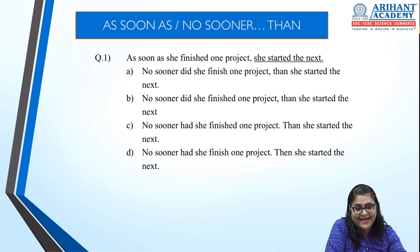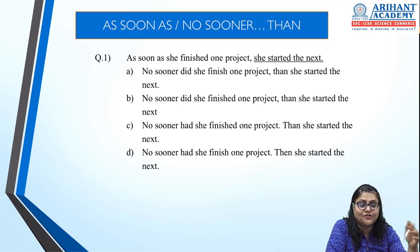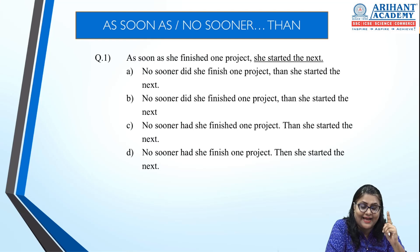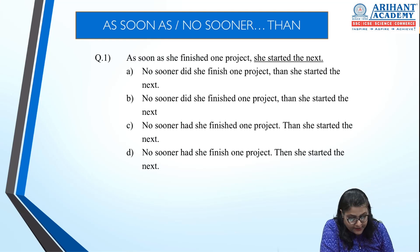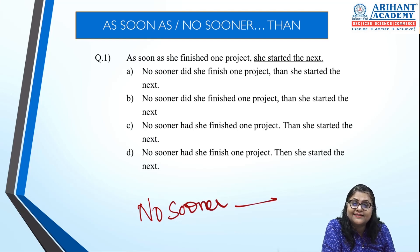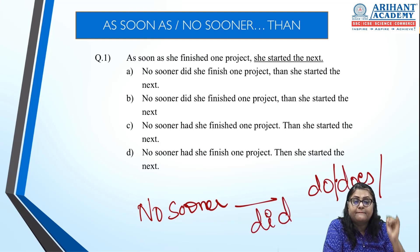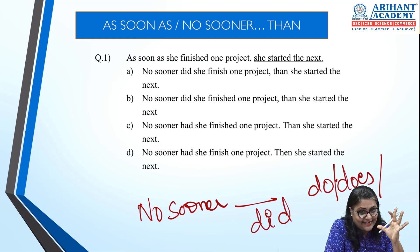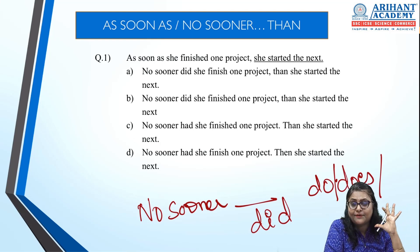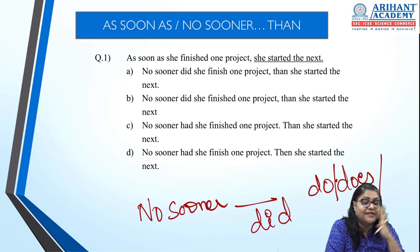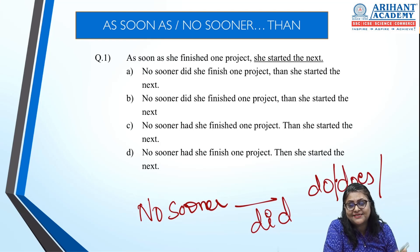Now we'll look at the transformation of 'as soon as' and 'no sooner than.' Whenever we use 'no sooner than', there must be a helping verb immediately after 'no sooner.' The helping verb can be 'do', 'does', or 'did', depending on the sentence. If the sentence already has a helping verb, use the same one; otherwise, use do/does/did.